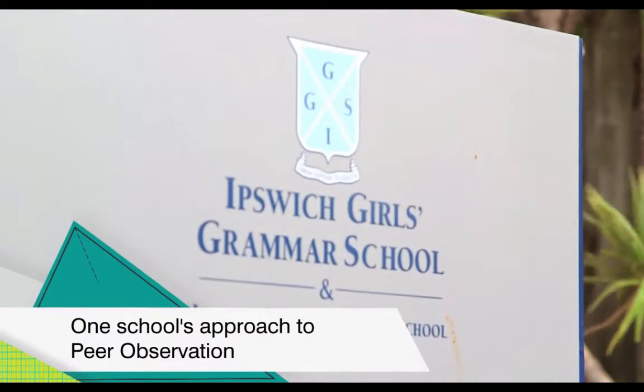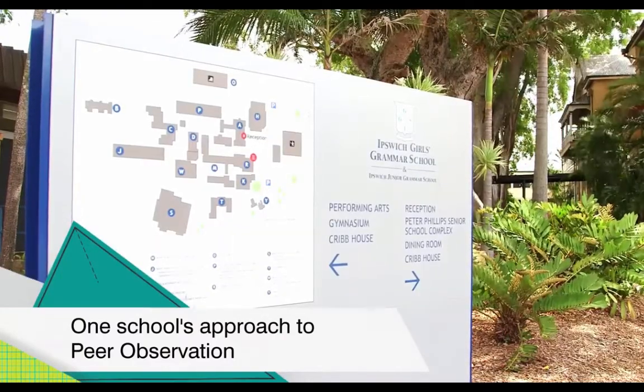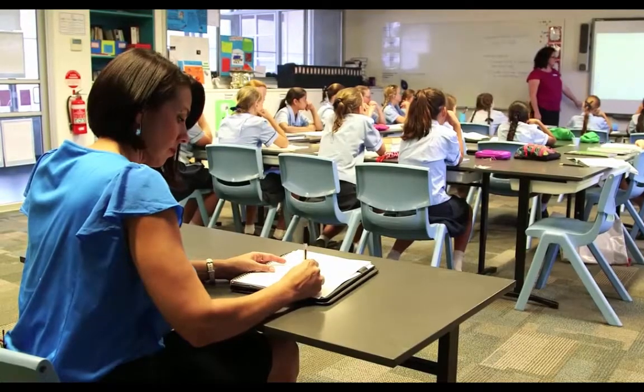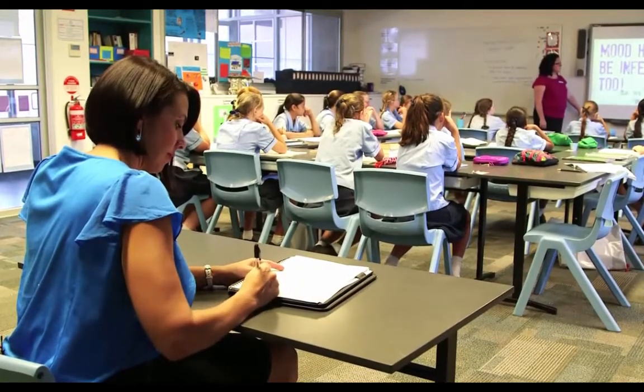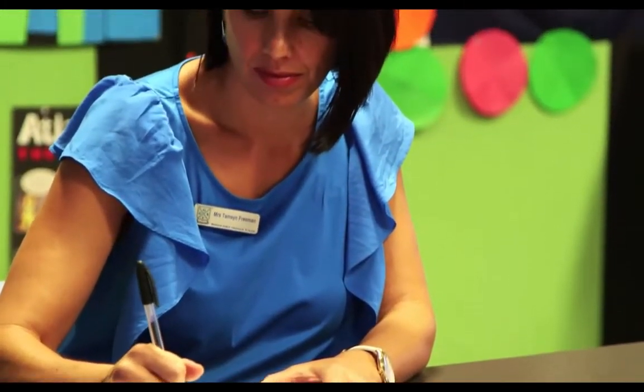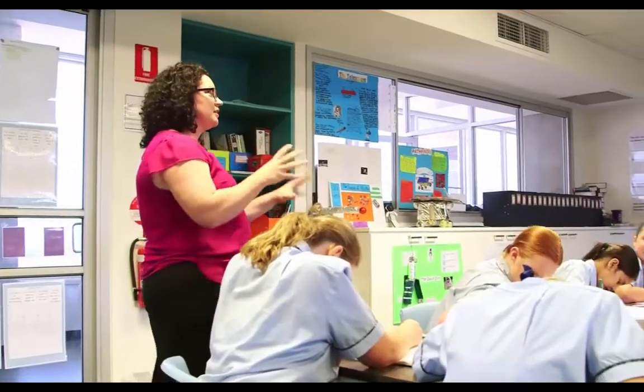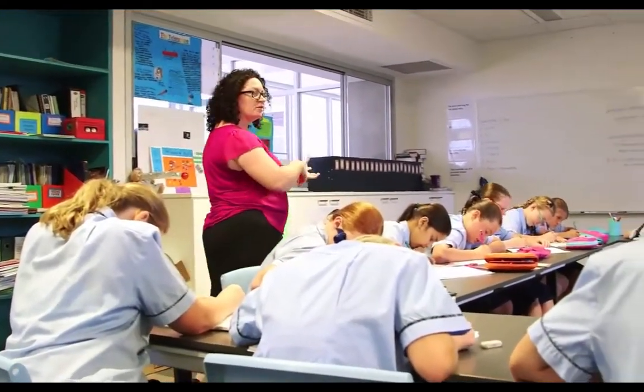Peer observation at Ipswich Girls Grammar School is the process whereby a teacher arranges to come in and spend some time in the classroom of another teacher, looking at the strategies that are used within the class. We have a specific focus in that we are looking at lesson structure and particularly the articulation of lesson objectives. When we started our quality teaching project, the first thing we did was quite an extensive literature review, and it was very clear from the literature that peer observation was one of the best strategies for professional development that we could provide for our staff.